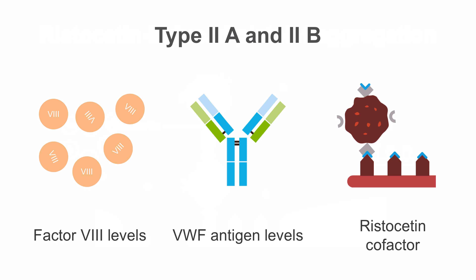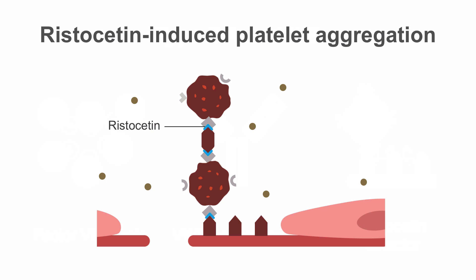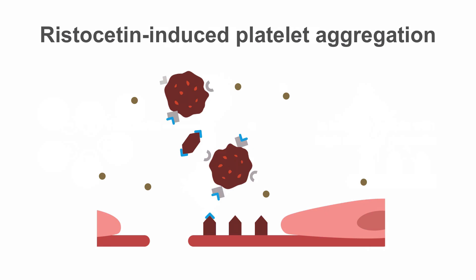In type 2A and 2B the results of the von Willebrand's disease panel vary. Ristocetin was originally an antibiotic which is no longer used; however, it enhances the interaction of von Willebrand's factor with GP1B, inducing von Willebrand's factor and platelet GP1B to interact and resulting in platelet clumping. This is normally seen in healthy people with a high dose of ristocetin but not with a low dose. In von Willebrand's disease there is reduced aggregation of platelets with high dose ristocetin, while low dose is not affected.